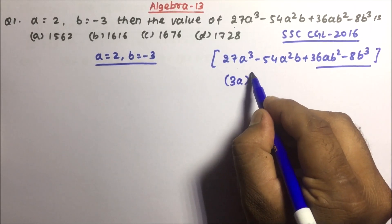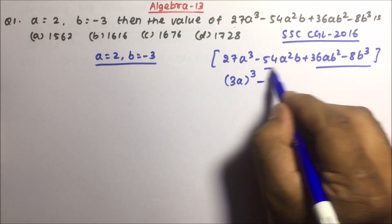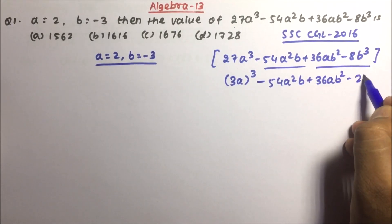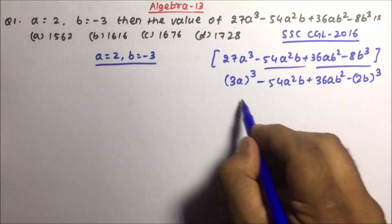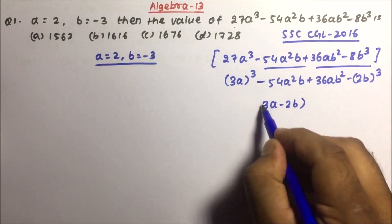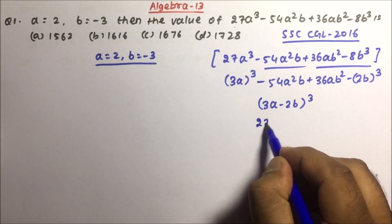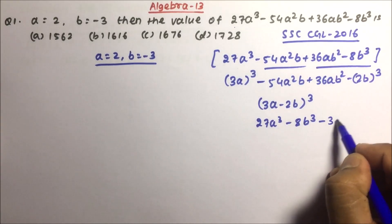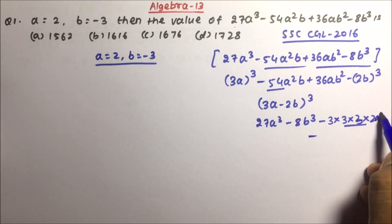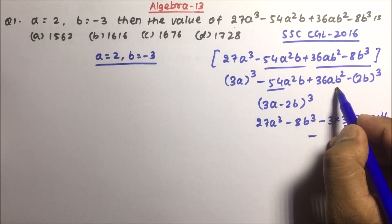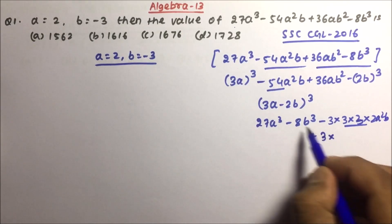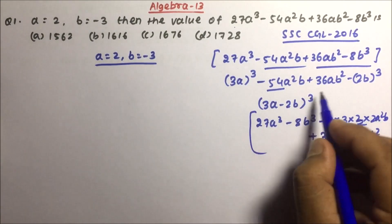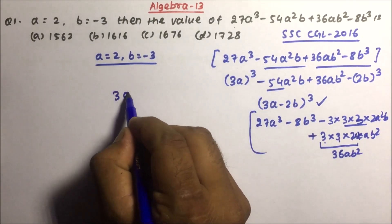Now, how can we write 3a cubed? 3³ will be 27, so 27a³. Then 54a²b and 36ab². We can also write 2b cubed as 8b³. So this expression is nothing but (3a − 2b)³, because (a − b)³ = a³ − b³ − 3a²b + 3ab². This is nothing but (3a − 2b) whole cubed, which makes it easy for us to calculate.